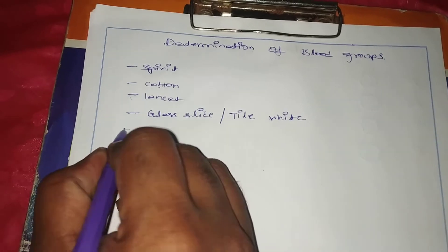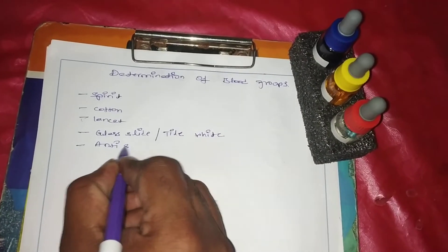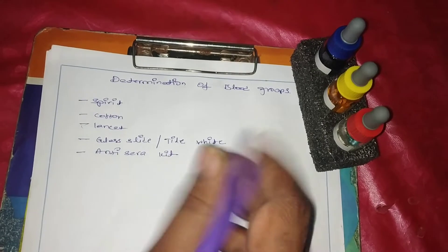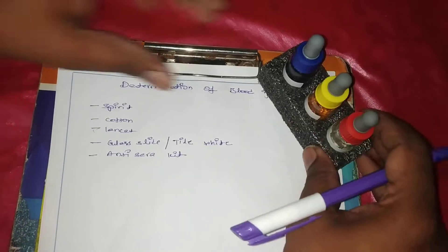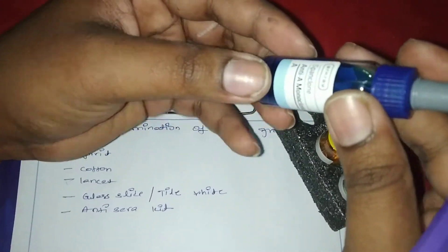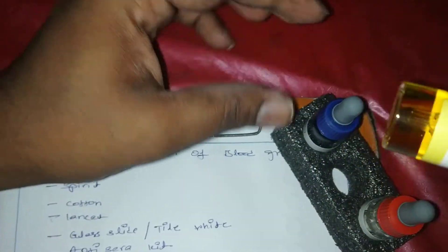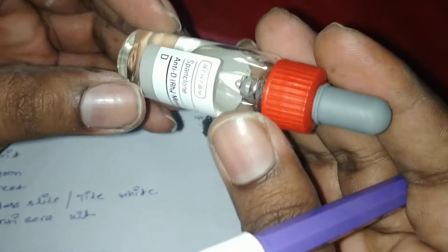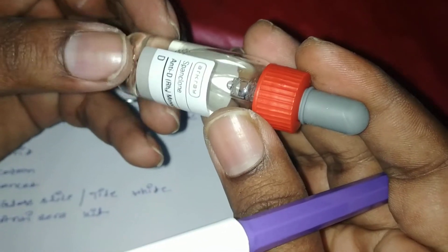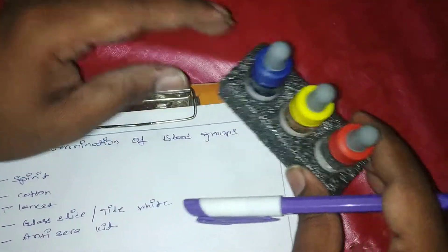The major thing is the anti-sera kit. This kit will contain three types of anti-sera: the first contains antibody A, the second contains antibody B, and the third contains antibody D — that means the Rh factor. I will explain that during the procedure. So we have three types of reagents in this kit.